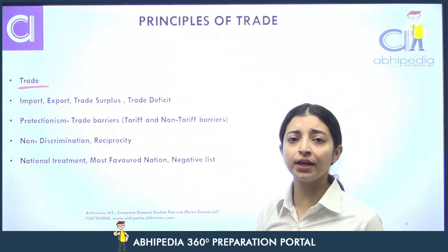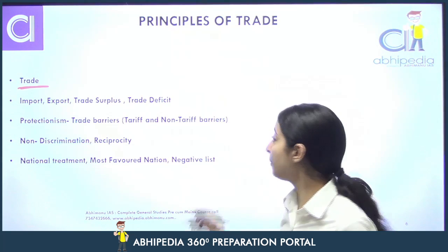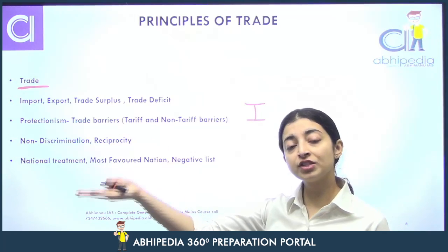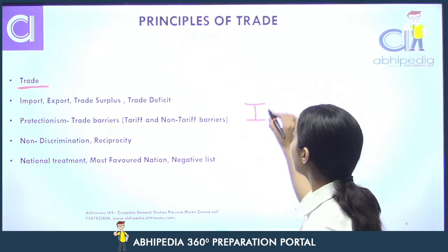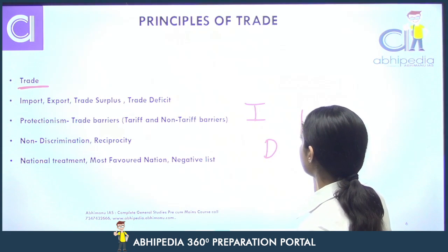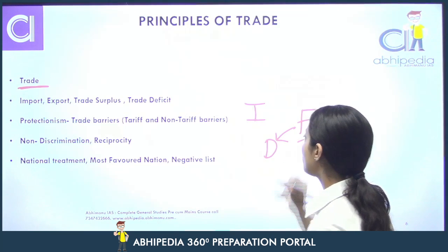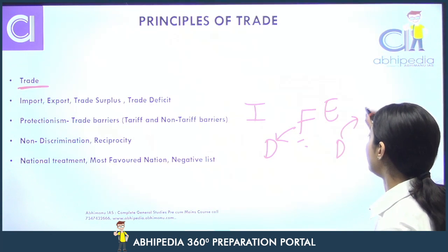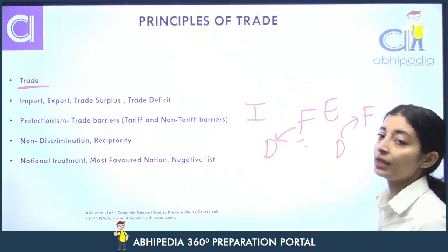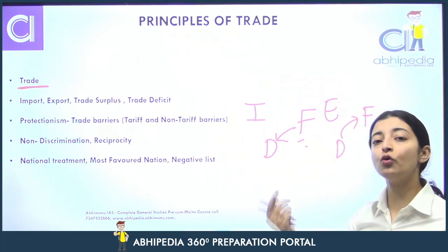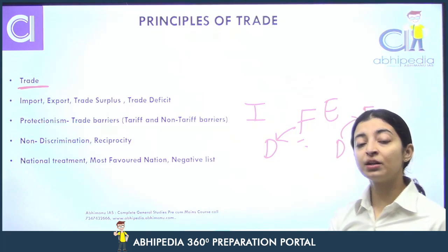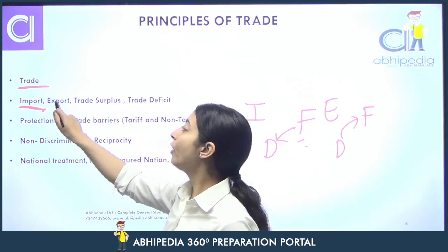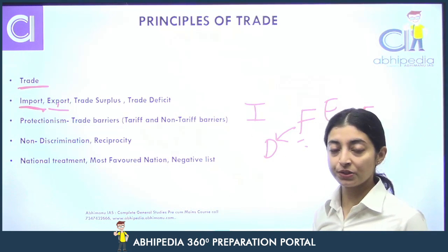Import kya hoti hai? Import tab hoti hai jab ek country kisi foreign country se kisi good ya service ko mangwati hai — usko import kehte hain. Ye ek domestic country hai aur ek foreign country hai. Foreign country se jab wo kuch samaan mangwati hai, to usko import kehte hain. Export kya hota hai? Export hota hai jab ye domestic country foreign country mein koi good ya service bhejti hai trade karne ke liye — usko hum export kehte hain. Jo cheez bahar ja rahi hoti hai, exit kar rahi hoti hai country se, wo export hai. Jo country mein aa rahi hoti hai, uska inward approach hota hai, to usko kehte hain import.